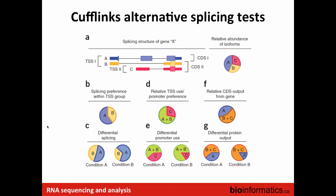Cufflinks attempts to do this and it's very clever, but it's a fundamentally hard problem, so we should be skeptical of what it produces since it involves a lot of guesswork. Cufflinks breaks the problem into three pieces: differential splicing, differential promoter usage, and differences in the resulting coding sequence.